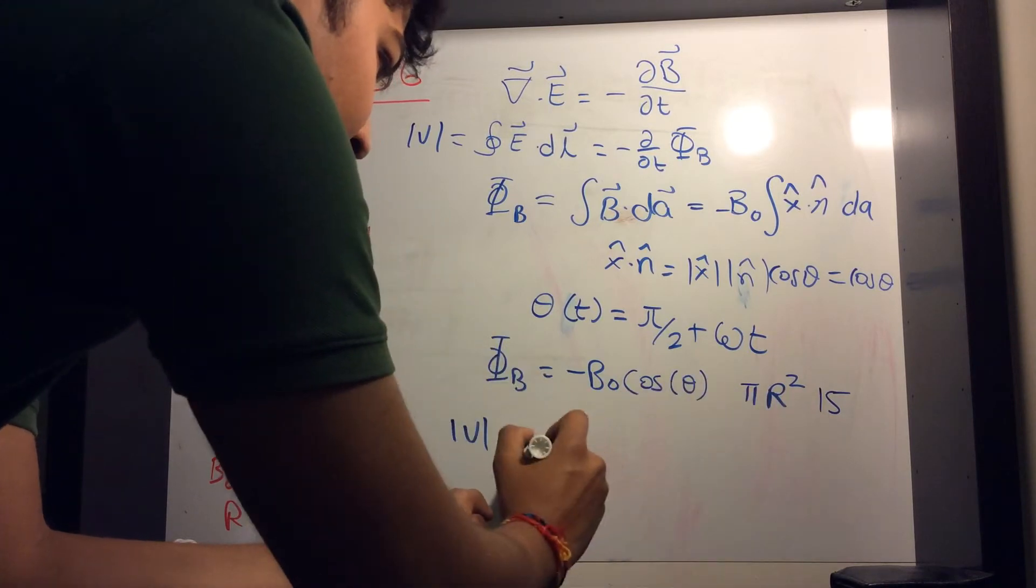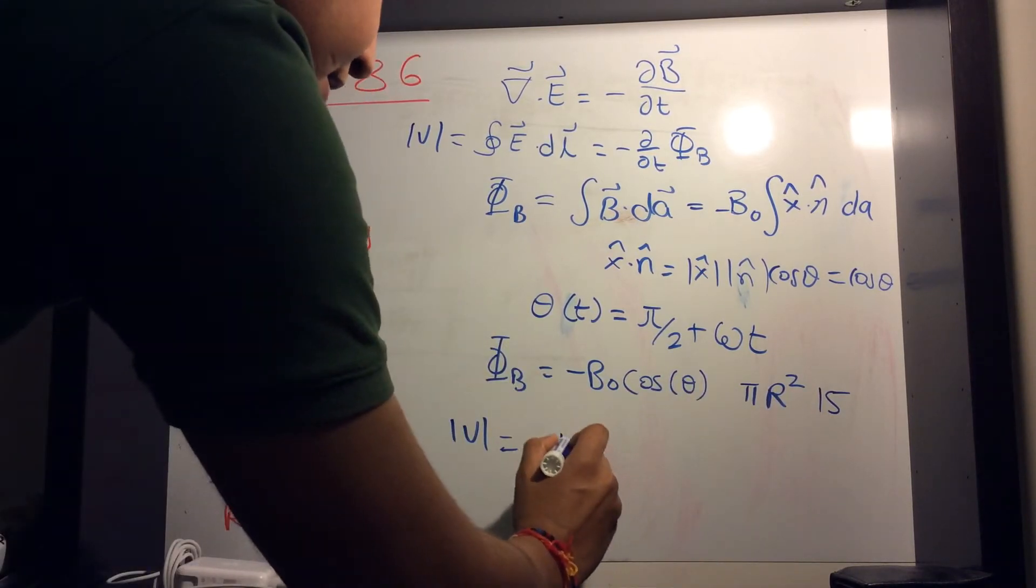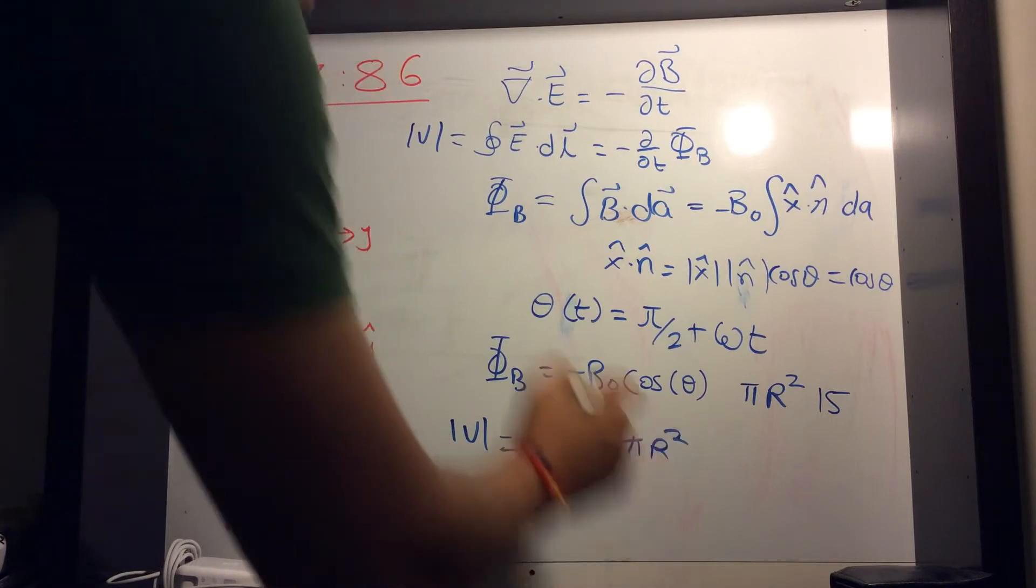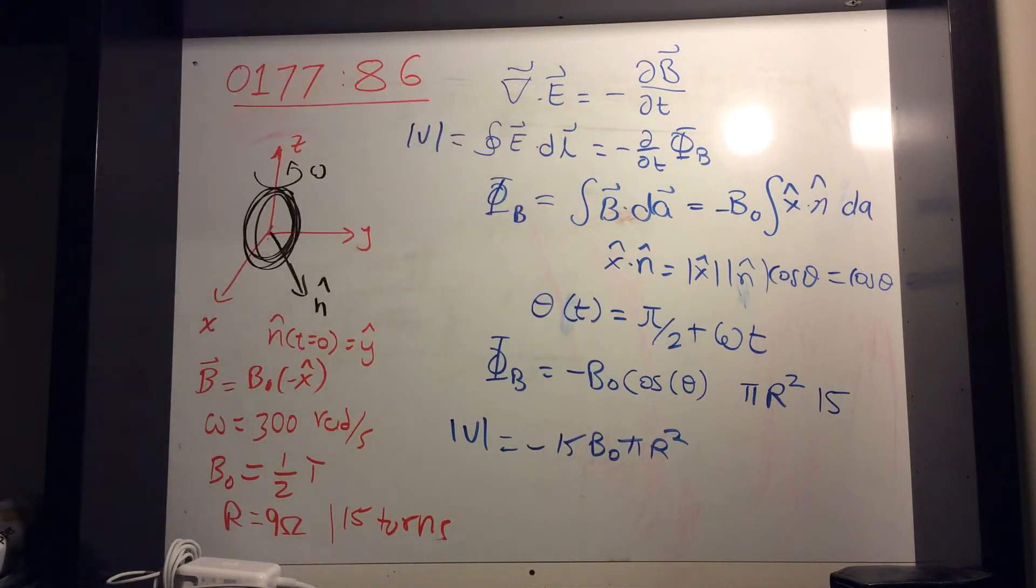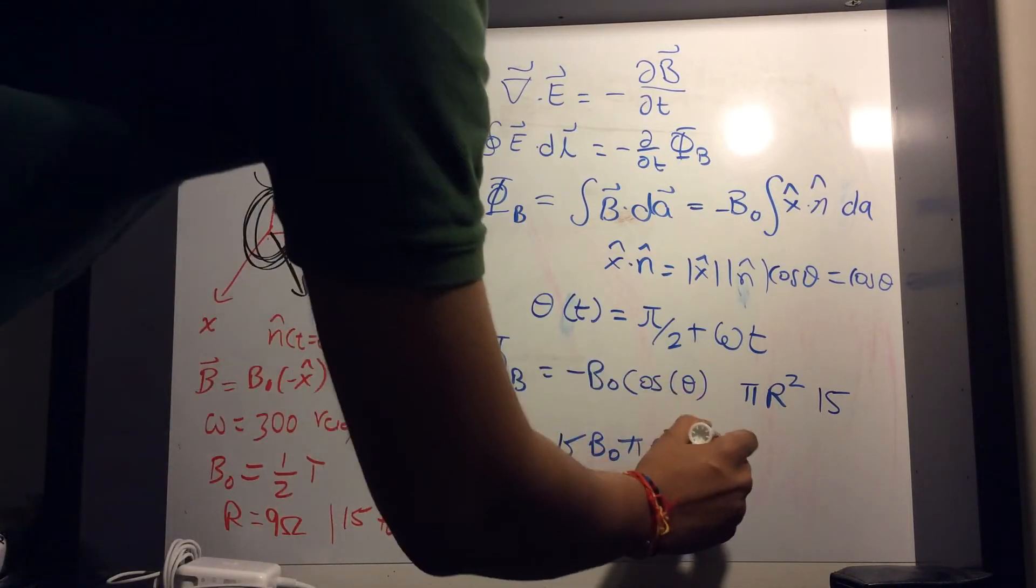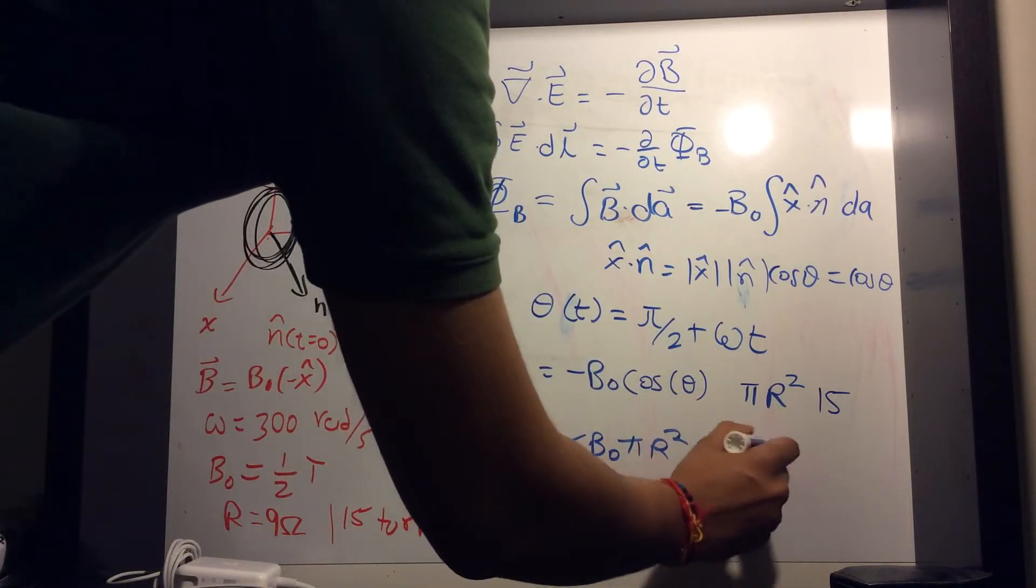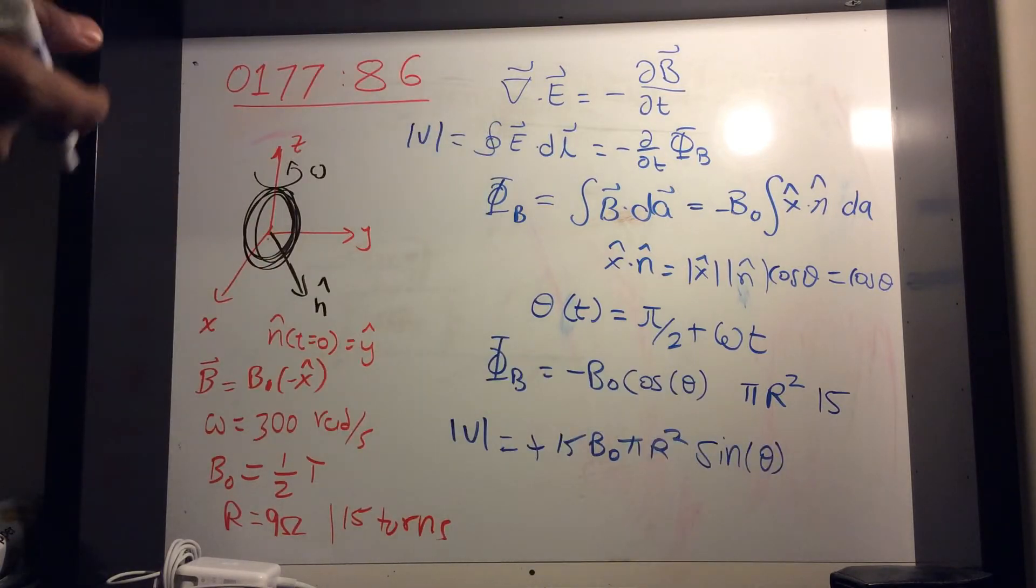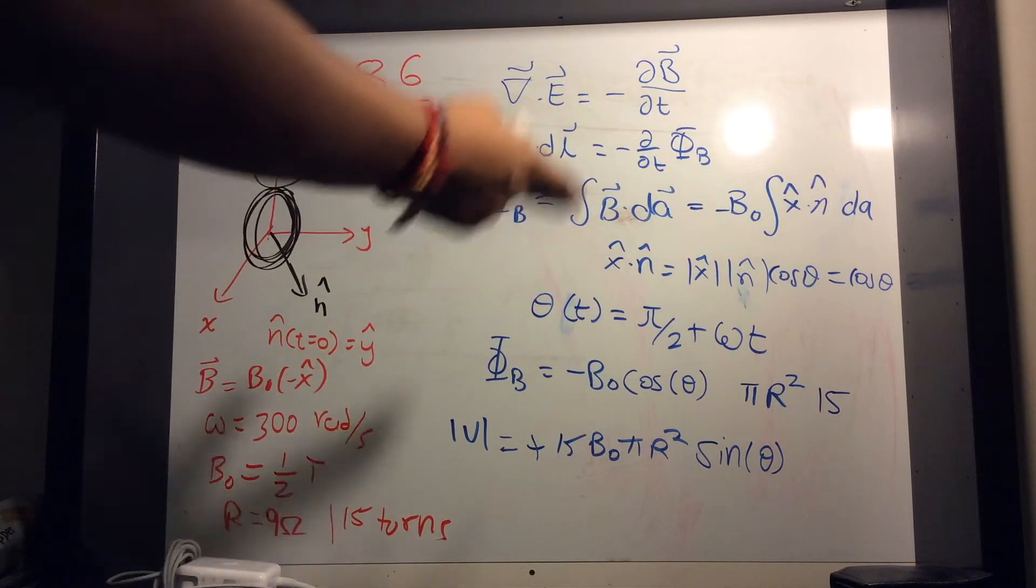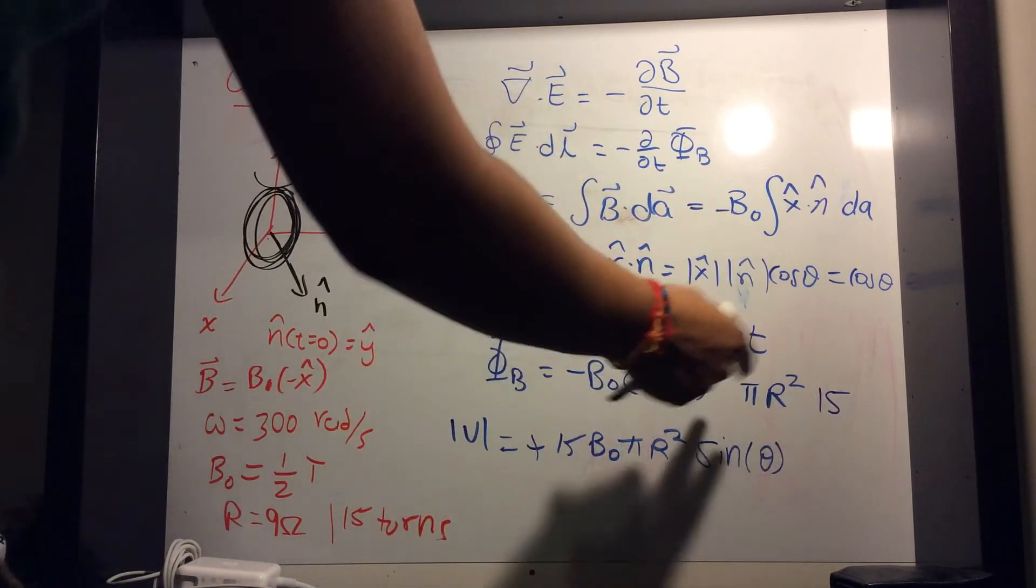So all this stuff is constant. So minus 15 B naught pi r squared. Derivative of cosine is minus sine. So minus makes that plus sine of theta.